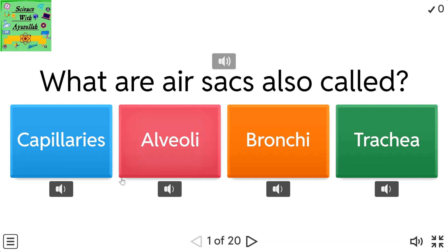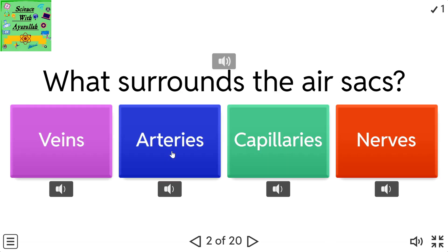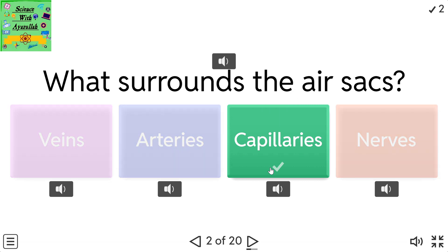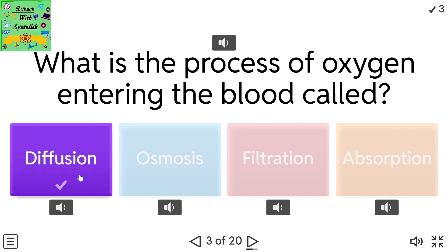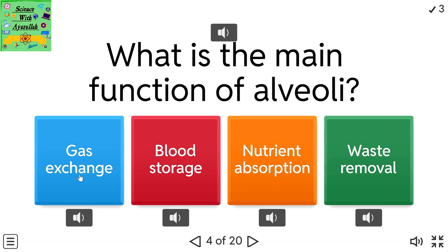What are air sacs also called? Capillaries / Alveoli / Bronchi / Trachea. What surrounds the air sacs? Veins / Arteries / Capillaries / Nerves. What is the process of oxygen entering the blood called? Diffusion / Osmosis / Filtration / Absorption. What is the main function of alveoli? Gas exchange / Blood storage / Nutrient absorption / Waste removal.